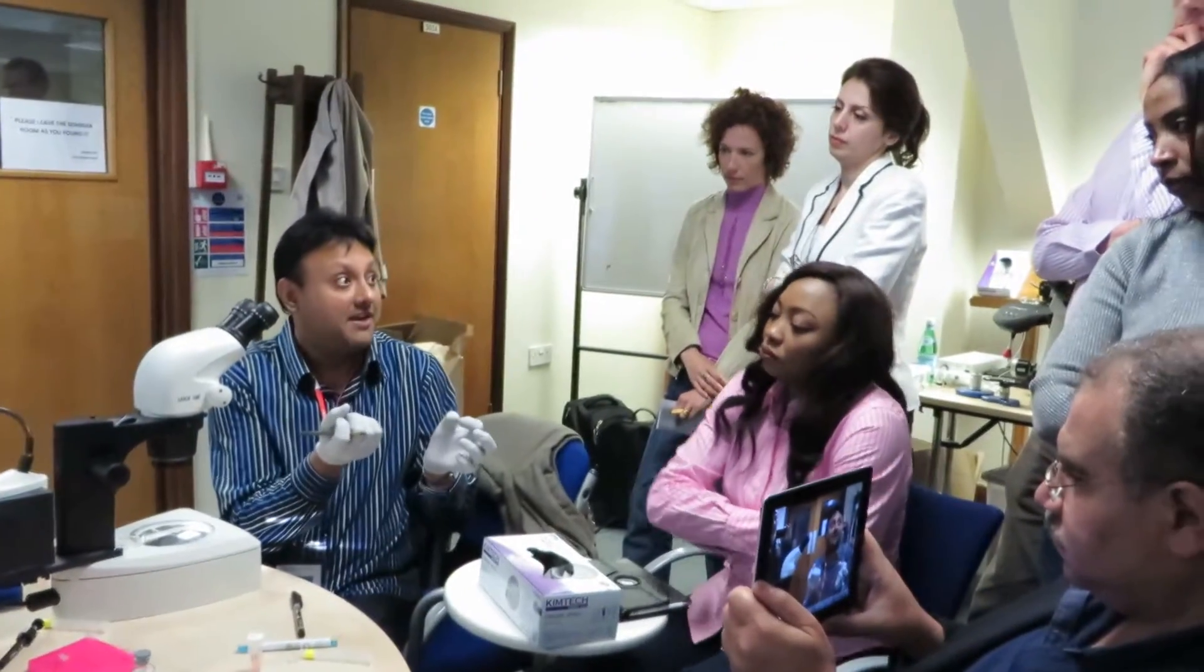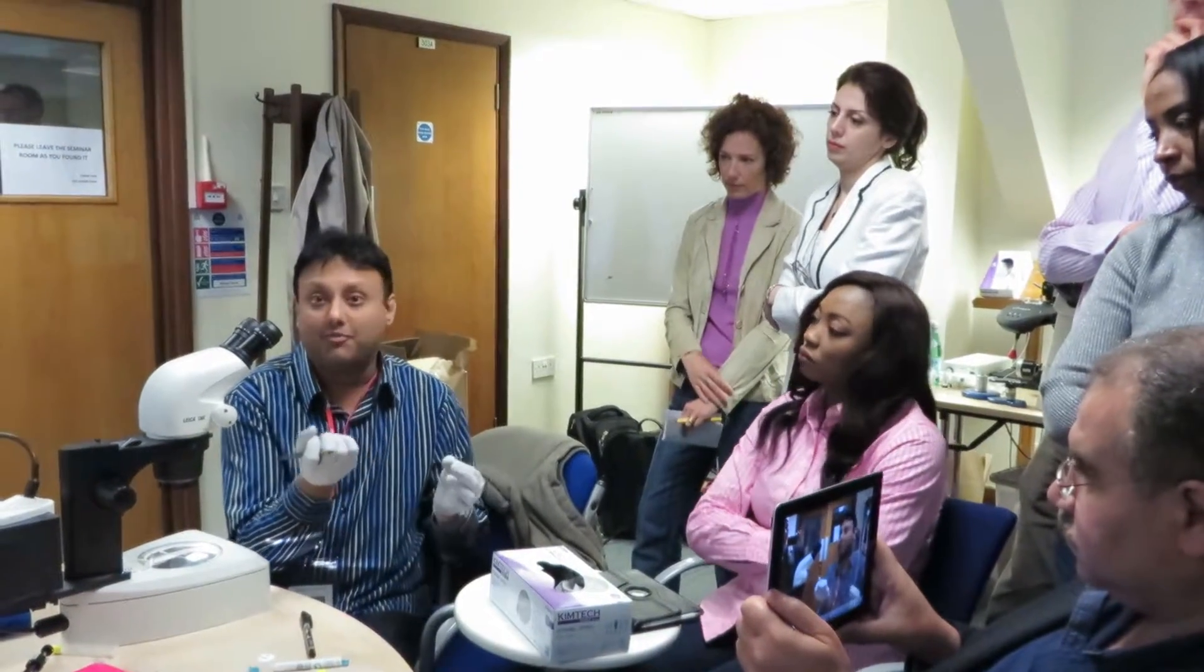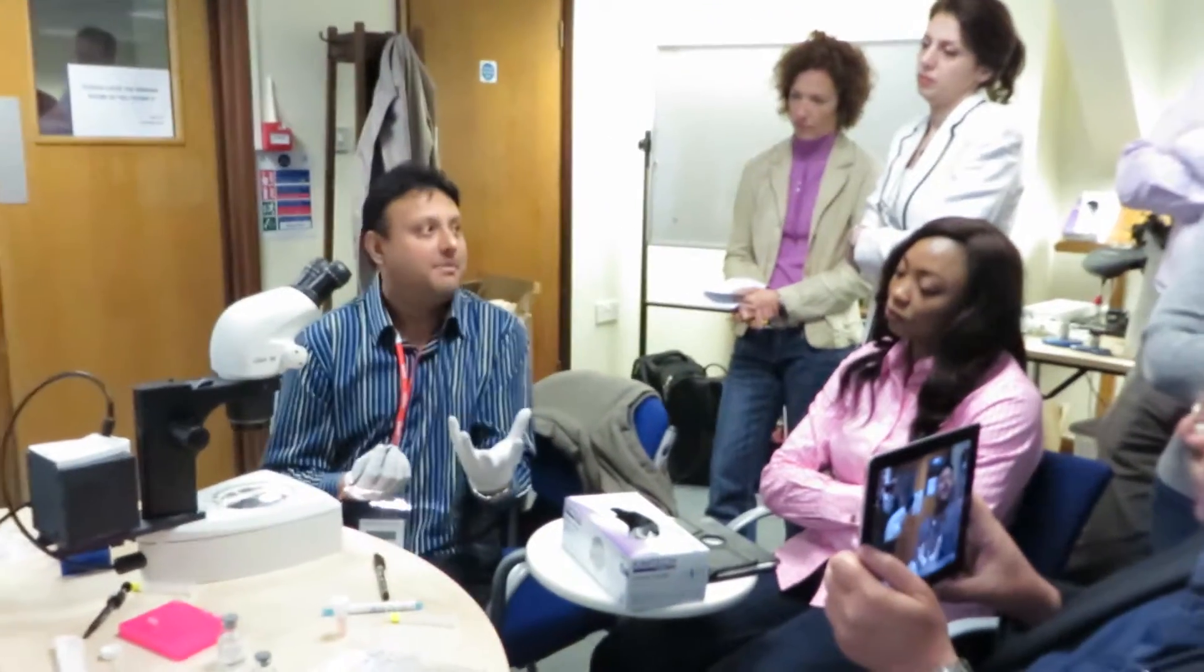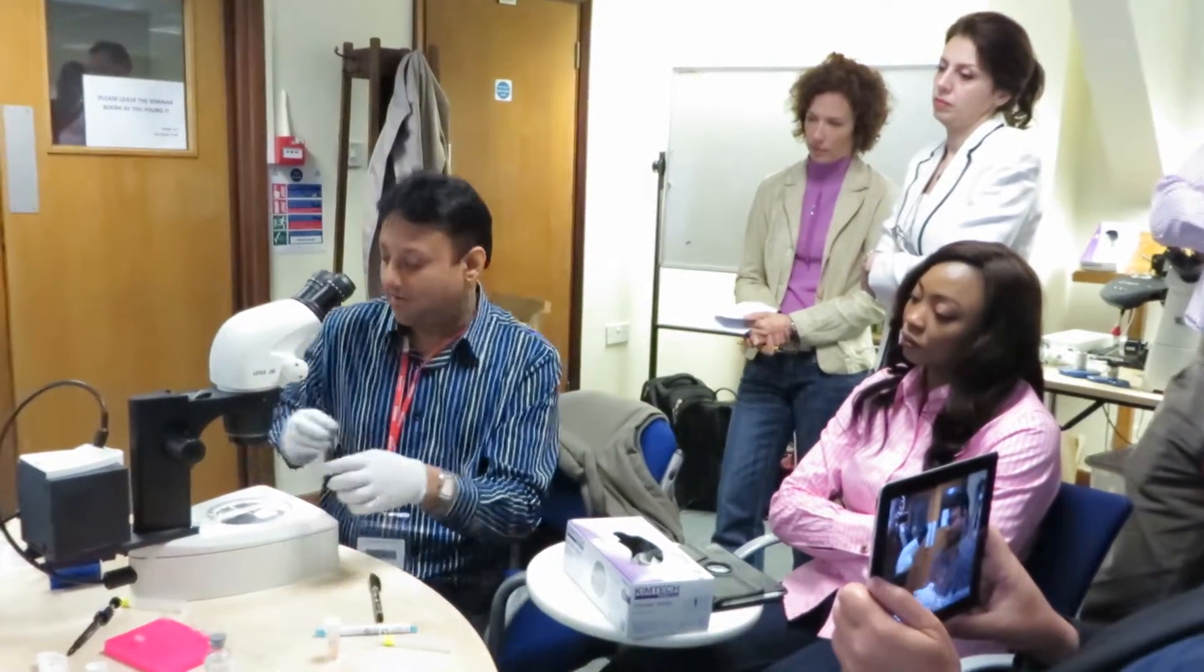As you know, the FISH probes are very tiny in amount. You literally put one microliter or even less, so it needs to go in a very specific area. You can't draw a very big circle because the probe is not going to be enough to cover that whole area. So your circle has to be quite small.